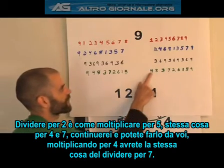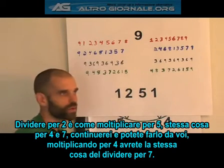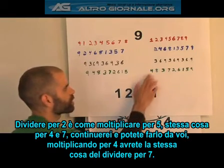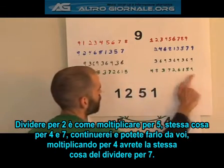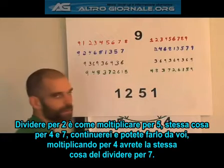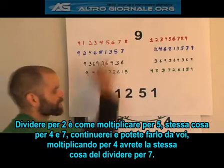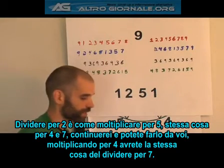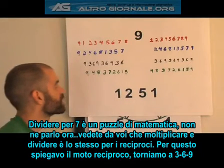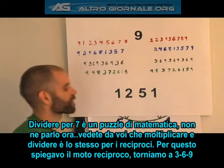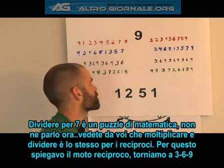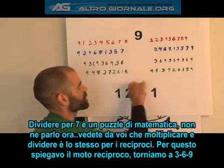You're going to find the same thing with 4 and 7 — I won't continue to do all these for you, you can do them for yourself. Multiplying by 4 gives you the same as you get when you divide by 7. Dividing by 7 has actually been one of those riddles of math — you can actually solve it with this and show it to be perfect, but I'm not going to go into that here on this video. Multiplying and dividing is the same given reciprocals.